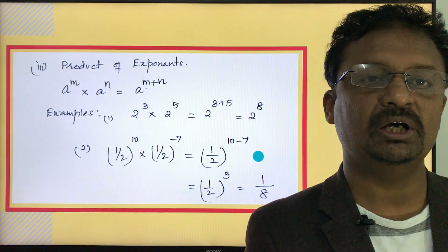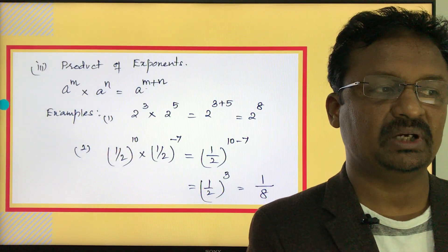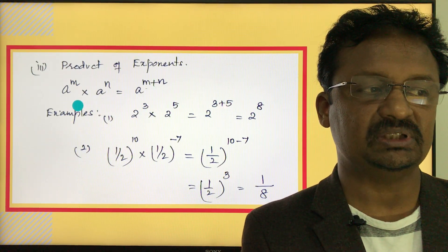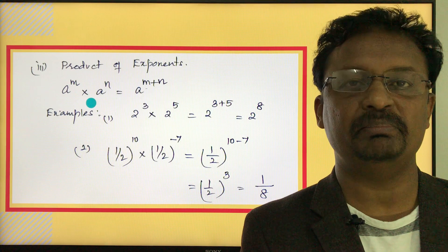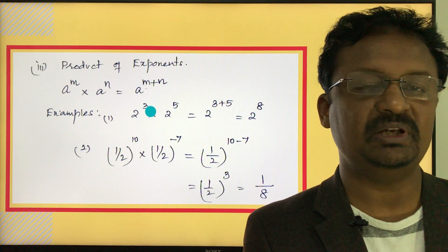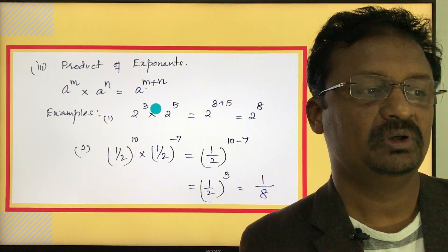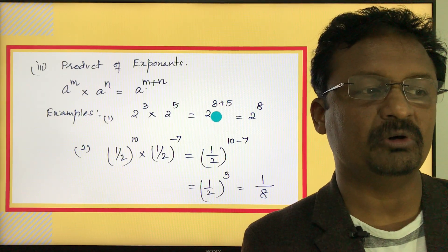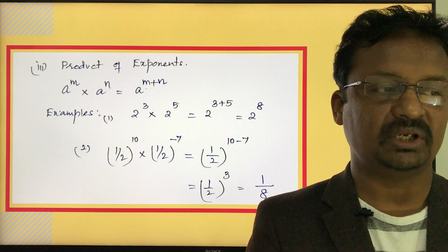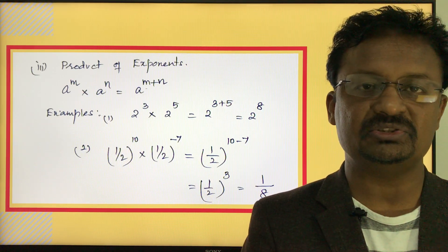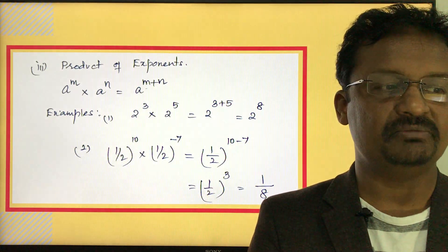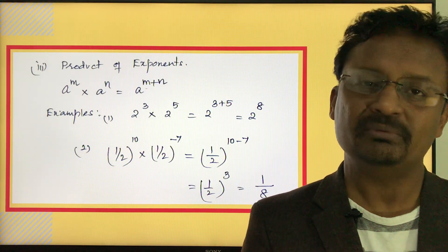Rule three is the product exponent rule: a to the power of m times a to the power of n equals a to the power of m plus n. If the base numbers are the same under multiplication, we can add the powers. For example, 2 to the power of 3 times 2 to the power of 5 equals 2 to the power of 8. Another example: one-half to the power of 10 times one-half to the power of negative 7 equals one-half to the power of 3, which is one-eighth.